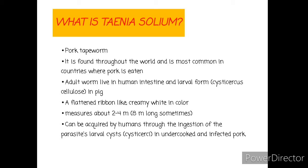The parasite is located in the small intestine, where it develops by absorbing nutrients from the food that the host eats. The adult worm lives in the human intestine, and the larval form, cysticercus cellulosae, develops in pigs. The adult form of this parasite looks like a flattened ribbon and is creamy white in color. This parasite measures about 2 to 4 meters, but sometimes up to 8 meters in length.